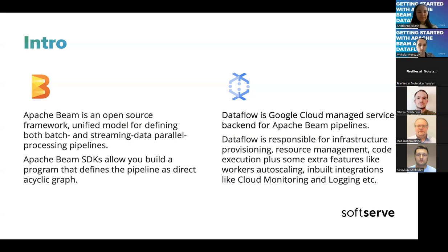Dataflow is a Google Cloud managed service that helps us easily execute Beam pipelines without worrying much about infrastructure. It also provides useful GCP integrations. Dataflow is not the only option to run Apache Beam — you can also use the direct runner for local development, or Spark and Flink runners. Apache Beam lets you write one pipeline definition and execute it on multiple different runners. Extra features Dataflow provides include worker auto-scaling, built-in monitoring, logging, and all Google Cloud integrations.